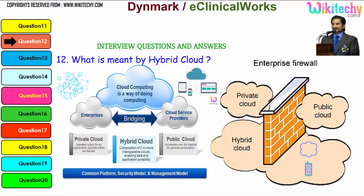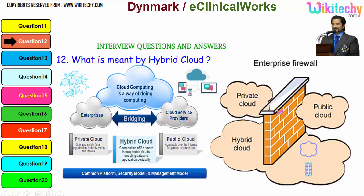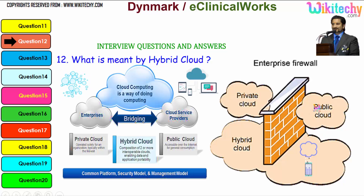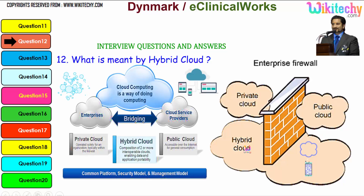Looking at firewall security: private cloud is really secure — you will have a specific firewall. With public cloud, you don't have many specific firewalls to control intruders. With hybrid cloud, it is partial — you will have some secure data behind the firewall and the rest of the data outside the firewall.